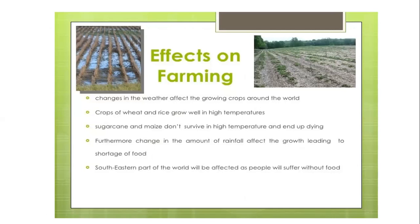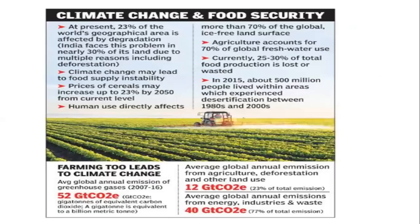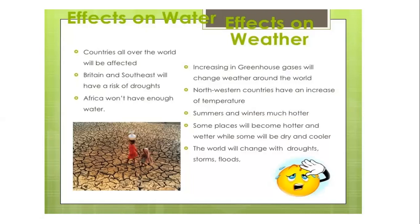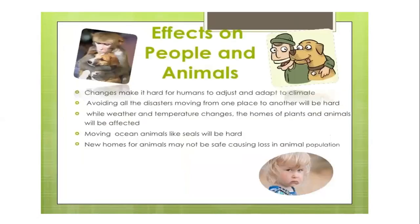Certain southwestern parts of the world will be affected as people suffer without food, leading to climate change and food safety concerns. Currently, 23% of the world's geographical area is affected by deforestation. India faces problems with nearly 30% of its land due to multiple reasons including deforestation.